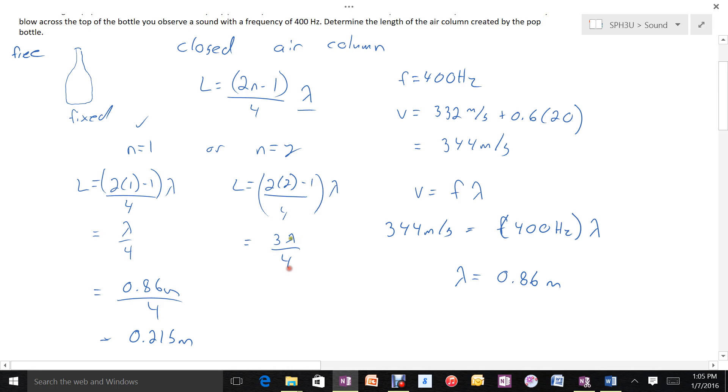If you remember the pattern, you can just write L equals lambda over 4. If not, the full equation is always handy. This gives 0.215 meters or a 21 centimeter pop bottle, which is reasonable.